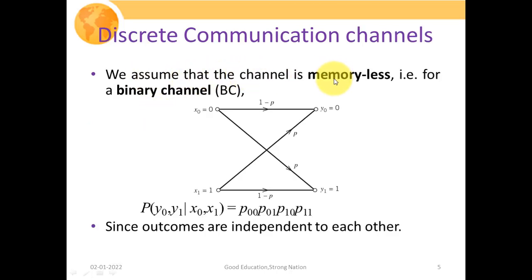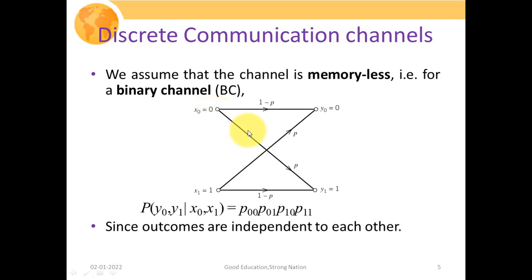We assume the channel is memoryless — that is, the generation of different symbols will not affect each other. For a binary channel, the source generates only two symbols: 0 or 1. At the receiving side we also receive two symbols, 0 and 1. The probability of transmitting 0 and receiving 1 is given as P, and similarly the error probability of transmitting 1 and receiving 0 is also equal to P.